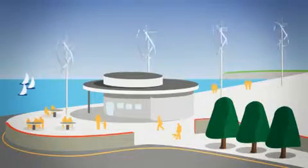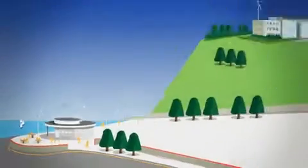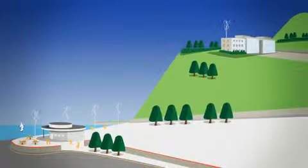Minimal obstructions such as trees, hills and other buildings will maximize the amount of energy a turbine can produce.